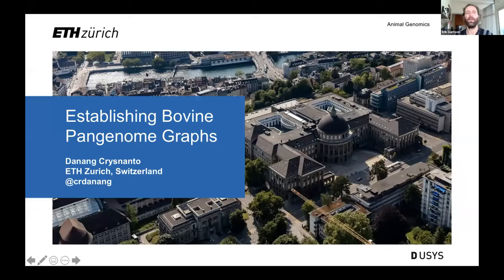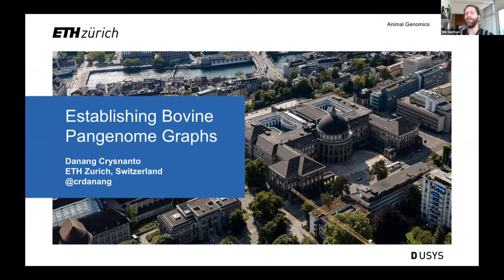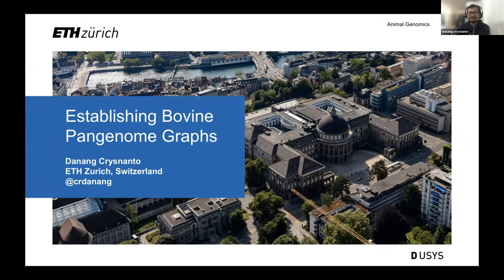I want to present the name Chris Nanto. You are a PhD student, is that correct? Yeah, just finished now. I'm at ETH Zurich. And doing his PhD, he's been applying methods built into the variation graph or pan-genomics community to applications in agricultural genomics, right? Yeah. OK, thank you. And take it away.